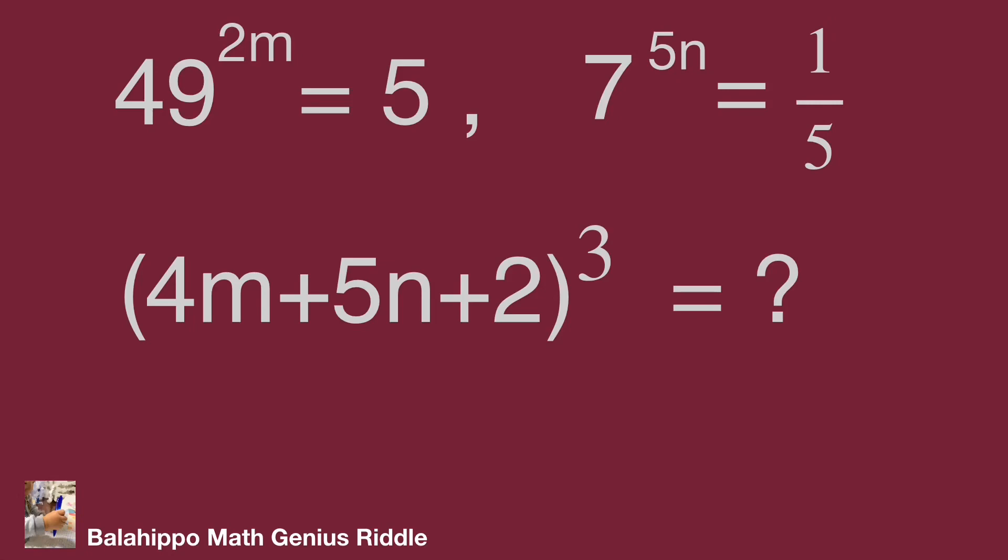Firstly, we are going to find the relationship from this given information. We have 5n in the second equation, 2m in the first equation, and 49 equals 7 squared.